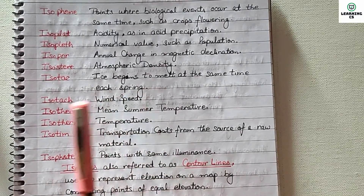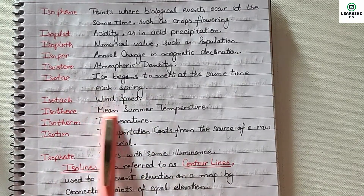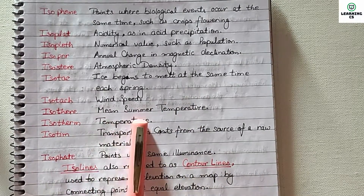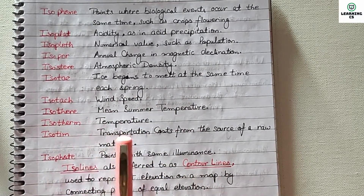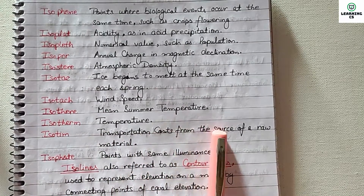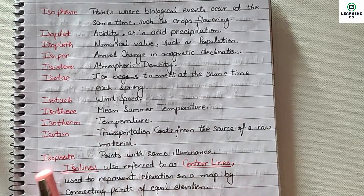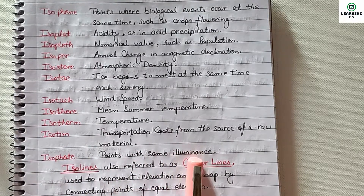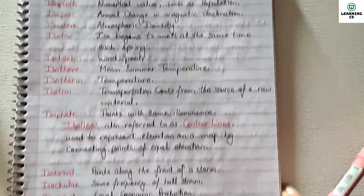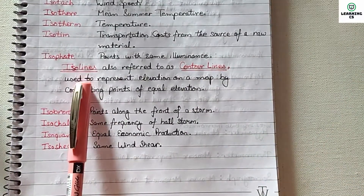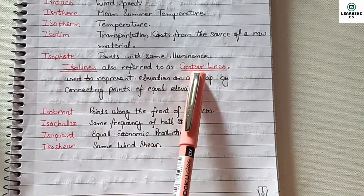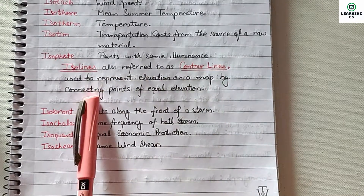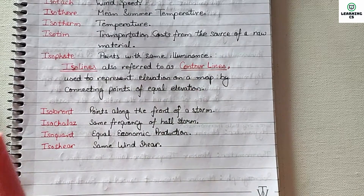Isoster: same atmospheric density. Isotech: ice begins to melt at the same time each spring. Isotach: same wind speed. Isotherm: same mean summer temperature or same temperature. Isotim: transportation cost from the source of a raw material. Isofert: points with the same illuminance. Isoline also refers to contour lines, used to represent elevation on a map by connecting points of equal elevation.